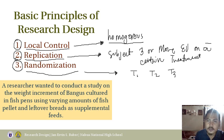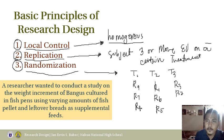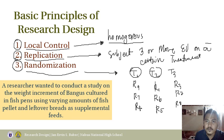You assign random numbers to each treatment. Say your experimental unit is a rat. You assign RAT9, RAT7, RAT4 to one treatment; RAT1, RAT6, RAT5 to another; and RAT3, RAT2, RAT8 to another — randomly assigning each experimental unit under a certain treatment.